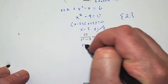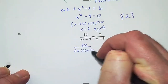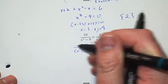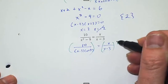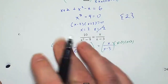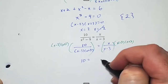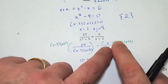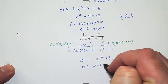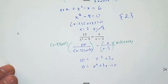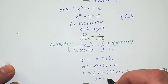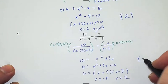For letter C, I factor the denominator to get (x − 3)(x + 3), so the least common multiple is (x − 3)(x + 3). Those completely cancel out leaving 10 = x² + 3x (since x times (x + 3) is x² + 3x). Setting equal to zero, this factors as (x + 5)(x − 2), giving x = −5 and x = 2. Neither gives a zero in the denominator so they both work.